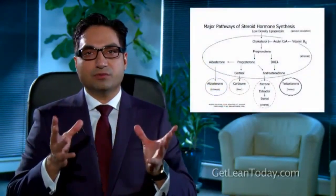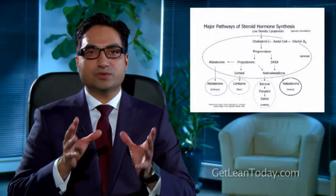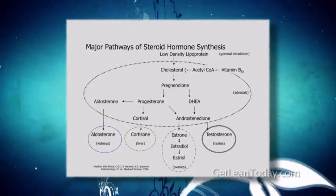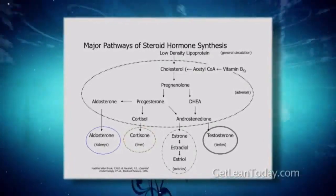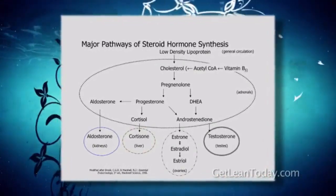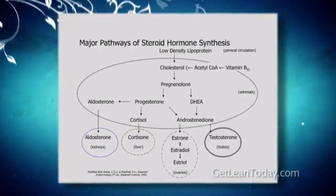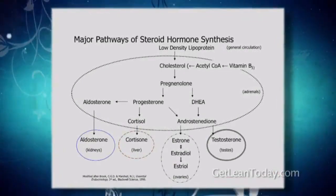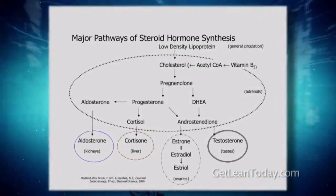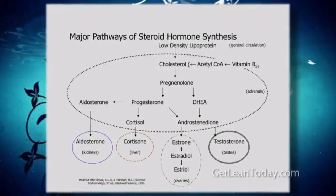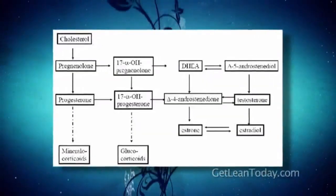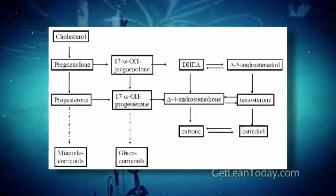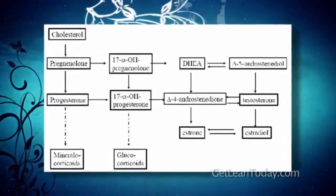We're going to go into some diagrams here, so pay attention. In this diagram, you can see the pathways of all these different hormones. It starts with cholesterol, which is obviously coming from the foods that we eat. You do need to eat some cholesterol in your diet. Your body then takes vitamin B5 and converts that and cholesterol into another hormone called pregnenolone. Pregnenolone is then converted into progesterone and cortisol in this pathway.